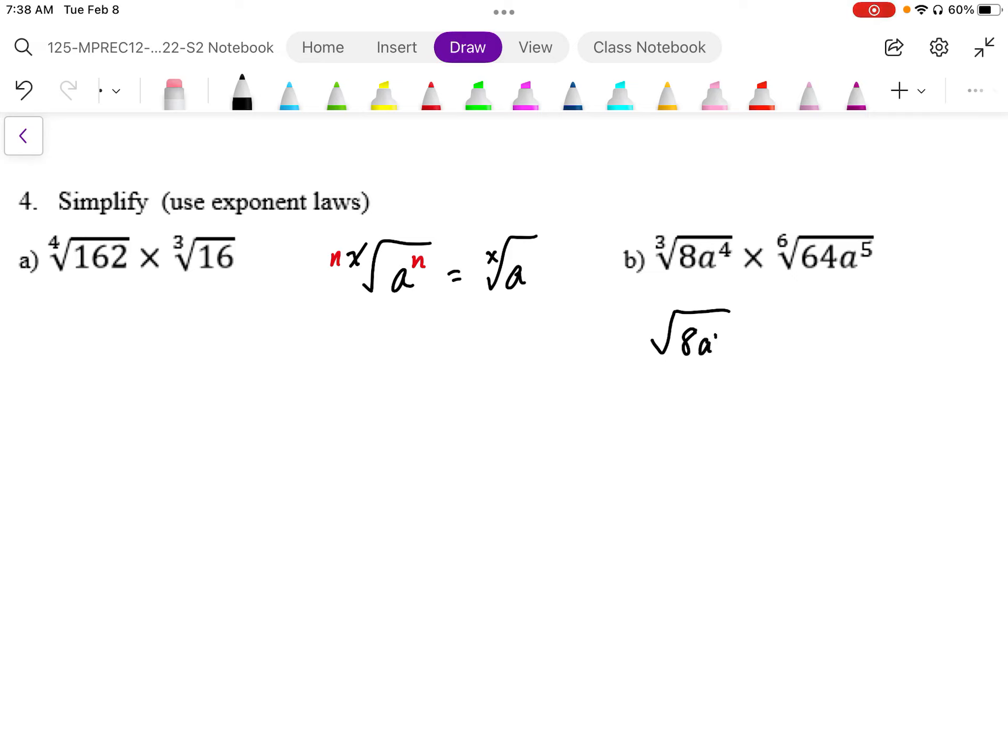So 8a to the 4, and this becomes root 6. And then as long as I power that up by 2, we have the same radical.